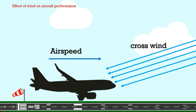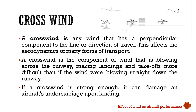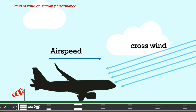There is one more category called crosswind. A crosswind is a type of wind that has a perpendicular component to the line or direction of the aircraft's travel. In aviation, the crosswind is a component of wind blowing across the runway, making landing and takeoff more difficult than wind blown straight down the runway. If crosswind is strong enough, it can even damage the aircraft's undercarriage upon landing.